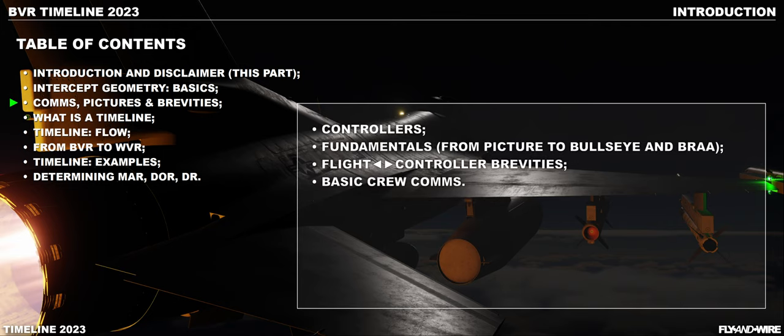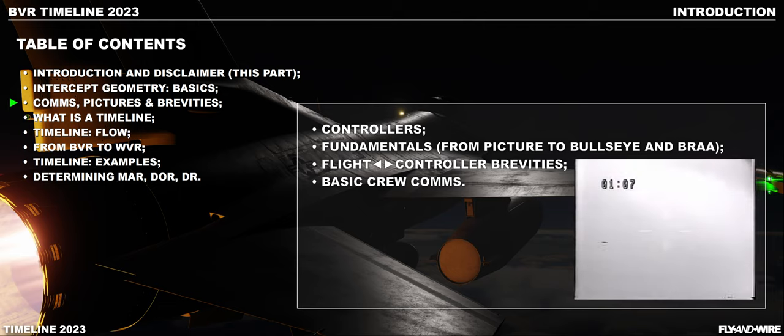Comms, pictures, and brevities introduces a fundamental aspect of aviation: the controller. Whether it is an air or ground-based controller, having a capable human controller is a must for any mission. This chapter introduces a number of common notions and brevities, from the BRA to the leading-edge picture. Additionally, there is a dedicated part to basic crew comms, useful for F-14 RIOs, F-4 Navs, and possibly F-15E WSOs. Real footage will be reviewed as well.